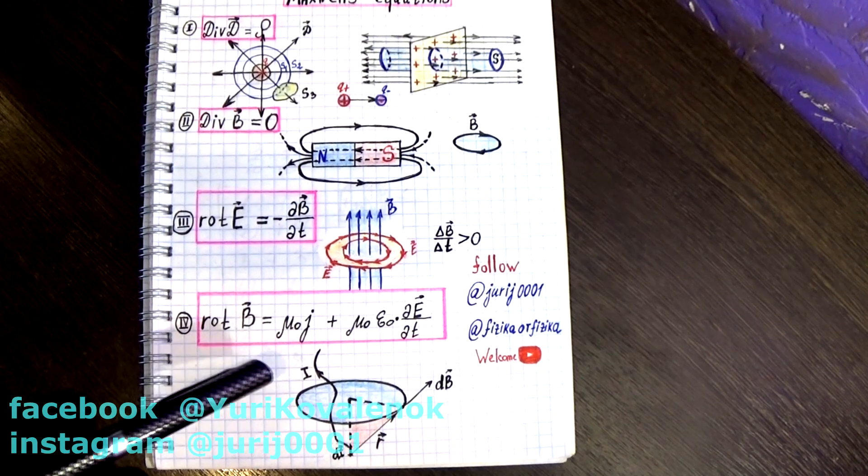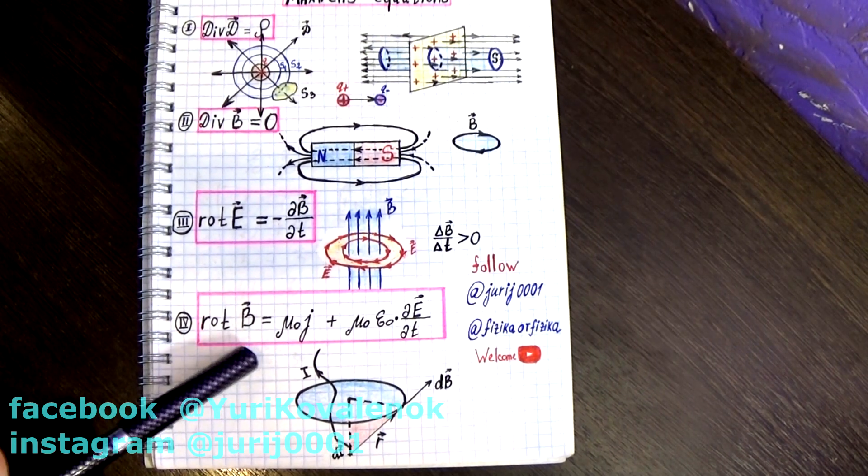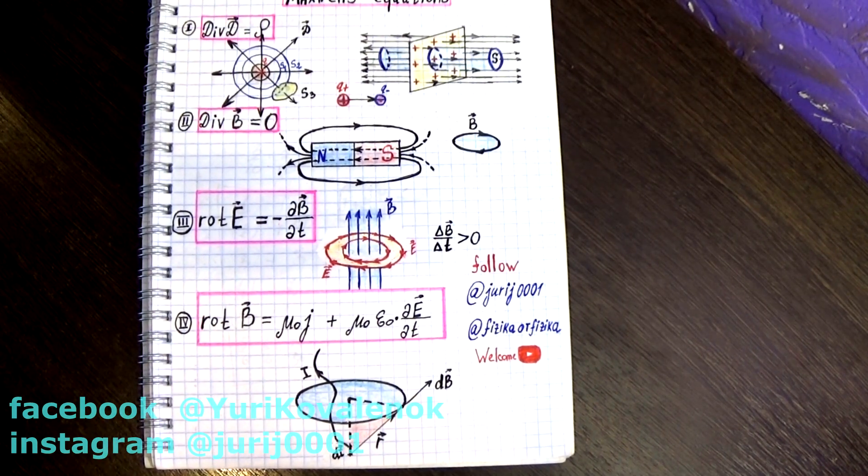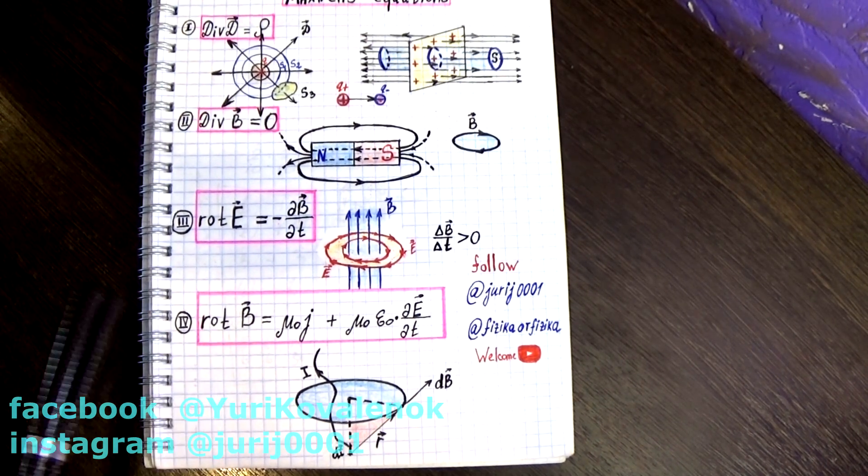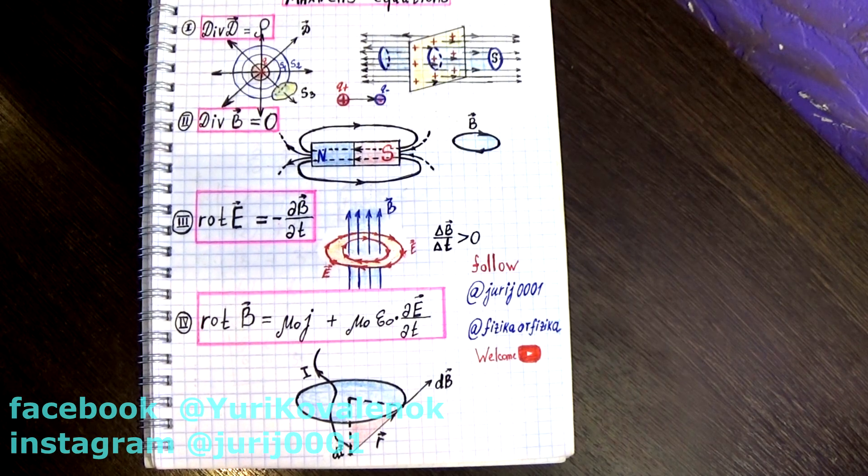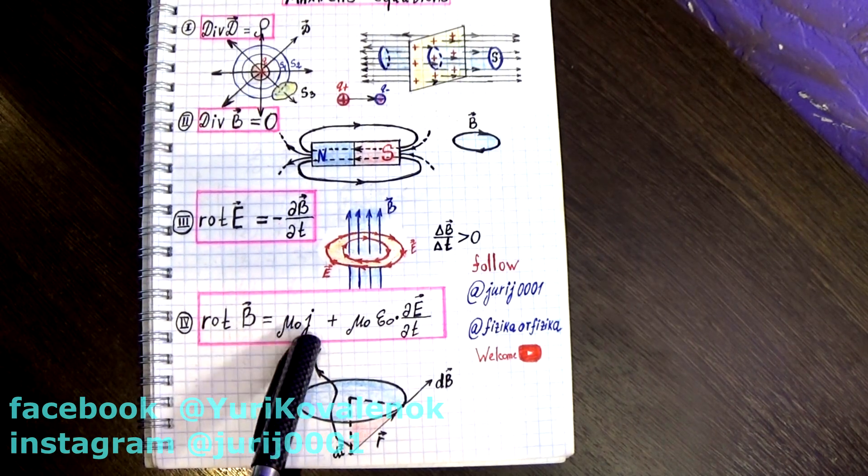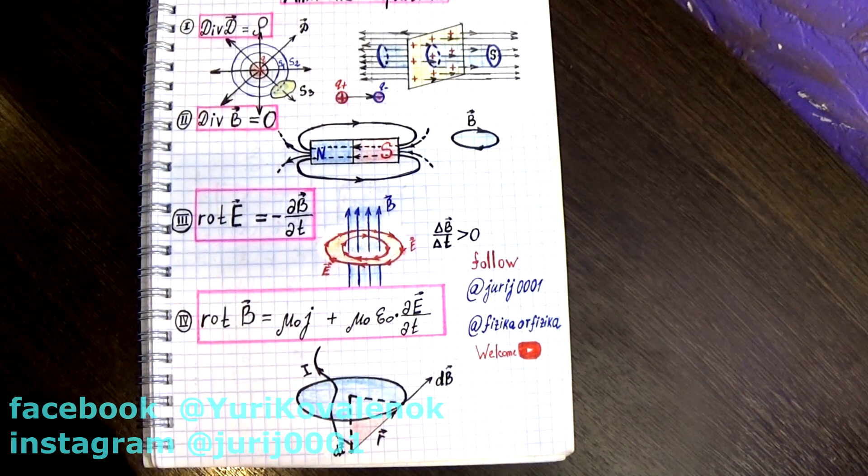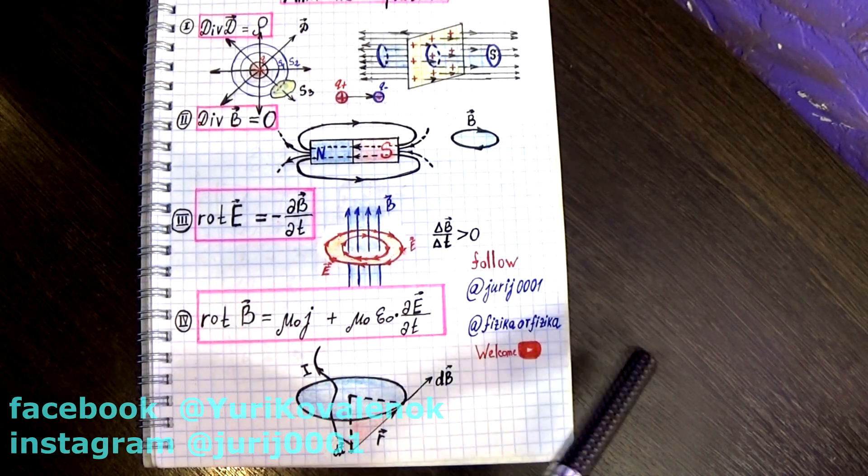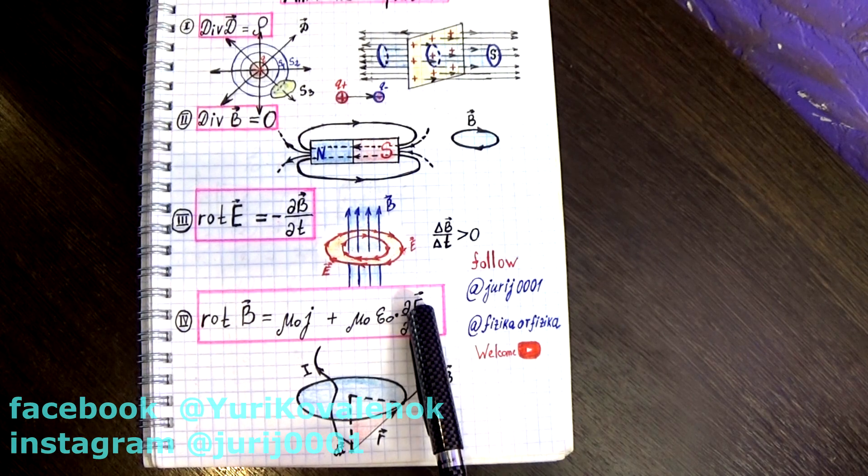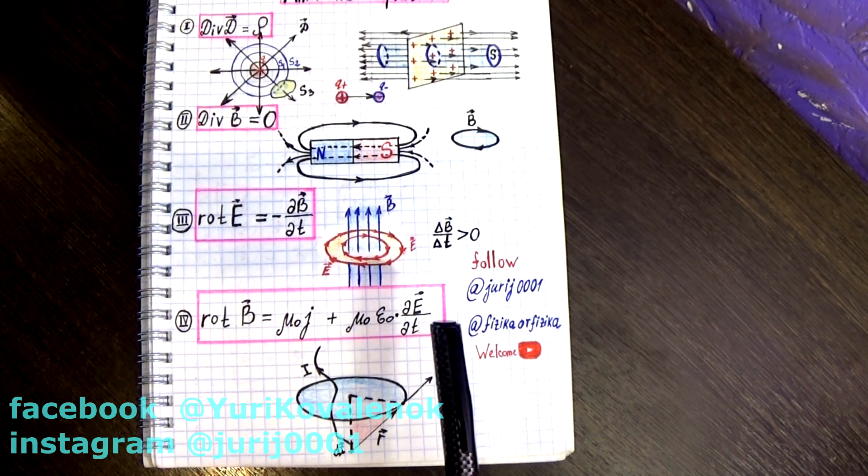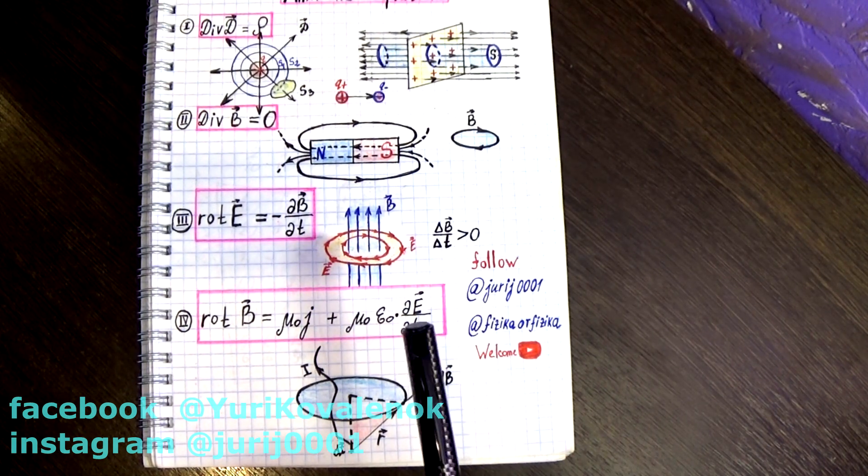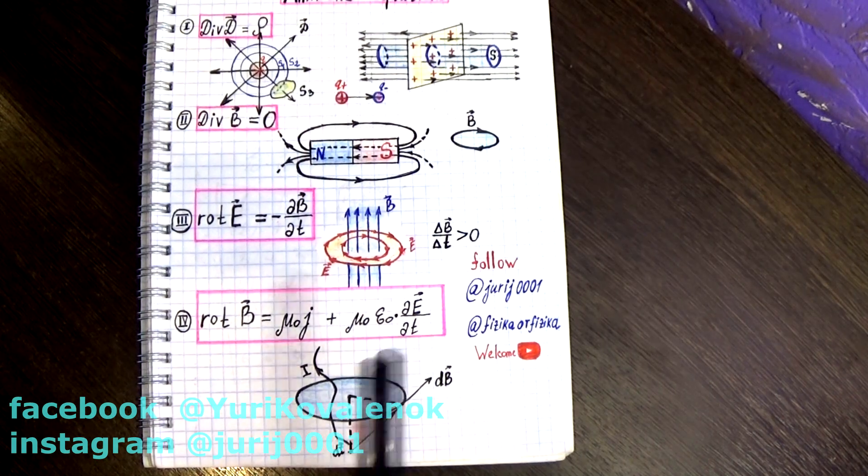And finally, the fourth Maxwell equation is the law of Biot-Savart. It asserts the fact that the magnetic field is created by the conduction current and displacement current. But it is better not to use the concept of displacement current. It is better to say that this is a time variable vortex electric field.